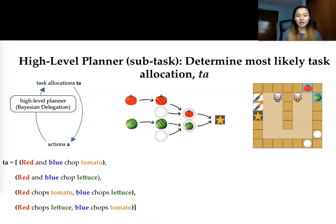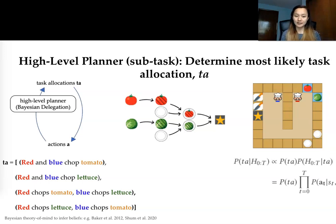So these agents are maintaining beliefs over these task allocations and they do so by Bayesian theory of mind. In contrast to prior works, our subtasks require coordination. So now given this distribution over task allocations, we want to select the most likely task allocation. We should just take the arg max over this distribution.